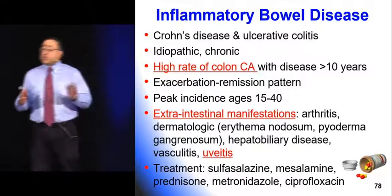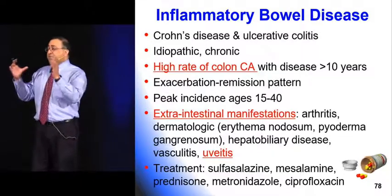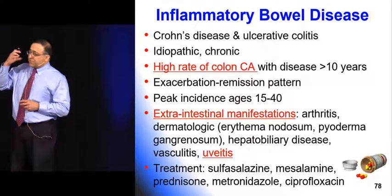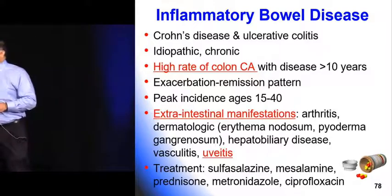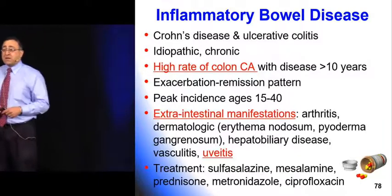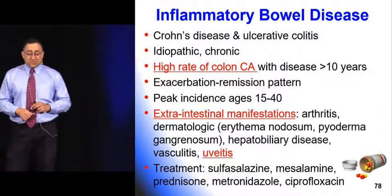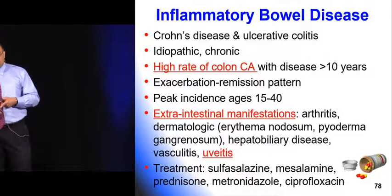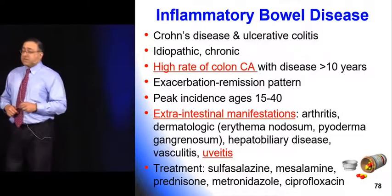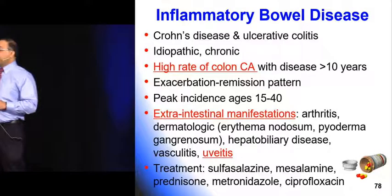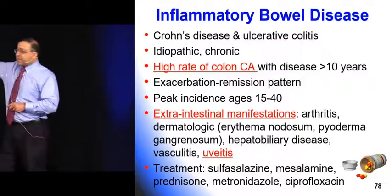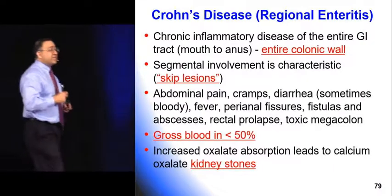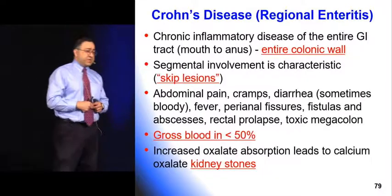Uveitis would make a great visual board question — a photo of an eye showing classic uveitis with photophobia, and by the way this patient has also been having some bloody diarrhea. Think about inflammatory bowel disease, specifically ulcerative colitis. Both Crohn's and UC are treated similarly with sulfasalazine or mesalamine; with severe episodes they get prednisone and sometimes antibiotics.